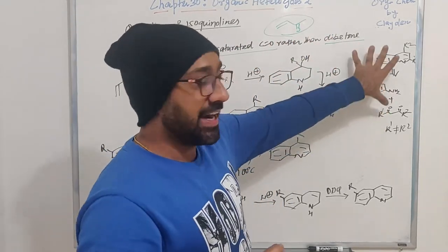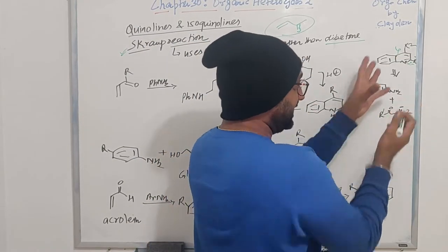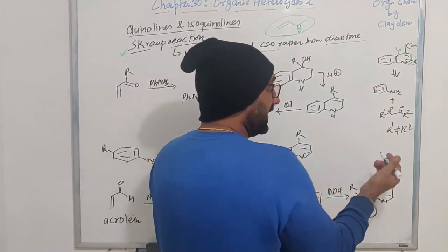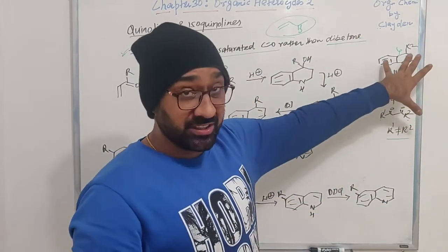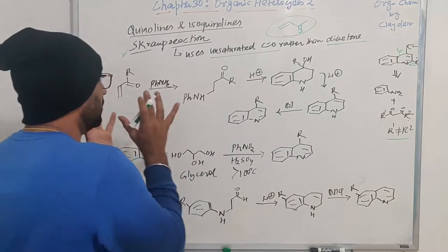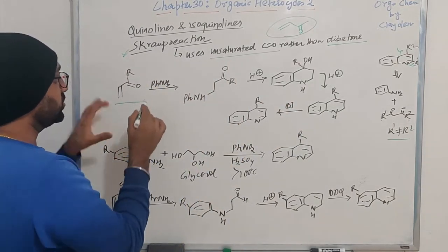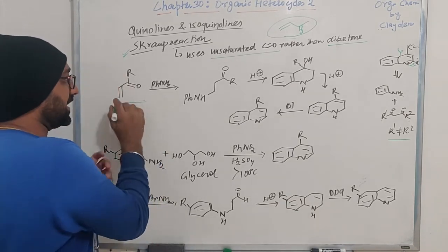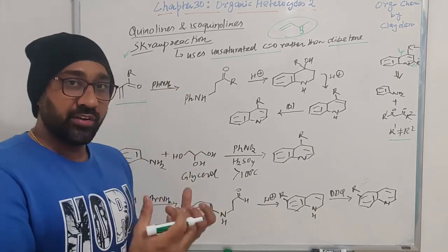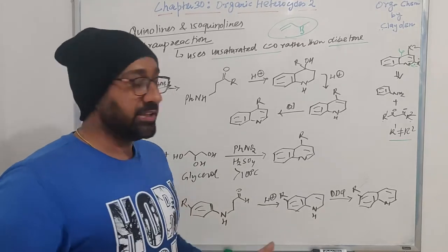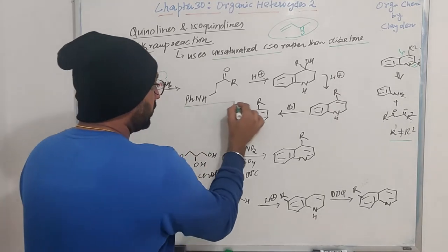In the previous strategy, if we have substitution at 2 or 4 position, even that strategy is fine. But if these two substituents are not symmetrical, that particular strategy is really problematic. In the Skraup reaction, instead of a diketone, we start from conjugated ketones. We take conjugated ketones along with an aniline and treat it in the presence of an acid such as H2SO4. The first step is the conjugate addition of the aniline to form such adducts.